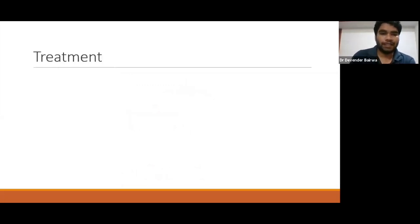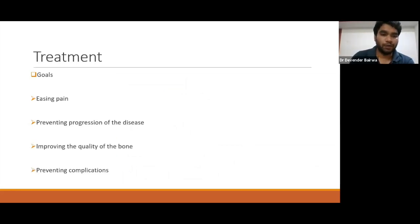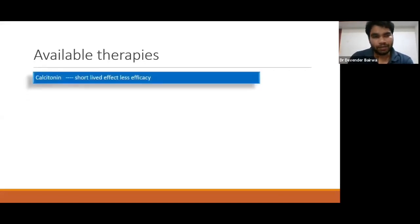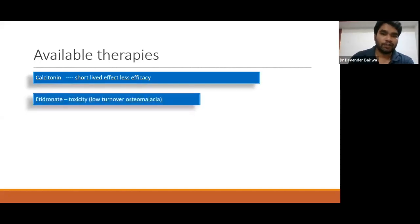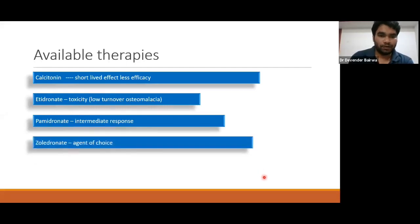Regarding treatment — goals include easing pain (from fracture or ongoing osteoclastic activity), preventing disease progression, improving bone quality, and preventing further complications. Available therapies include: calcitonin (short-lived, less efficacy); etidronate (a bisphosphonate with toxicity risk that can lead to osteomalacia, low turnover rate); pamidronate (intermediate response); and zoledronate — the agent of choice. The pharmacological agents approved for Paget's Disease include pamidronate, zoledronate, alendronate, tiludronate, and calcitonin.